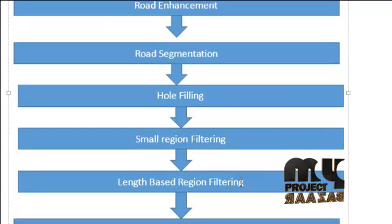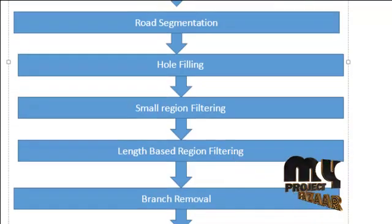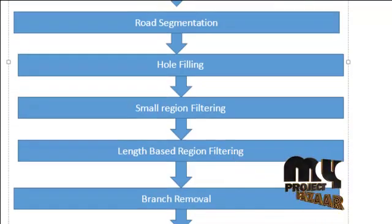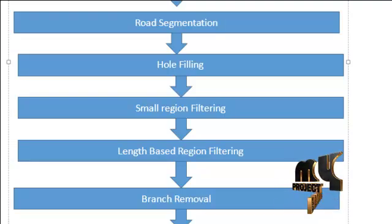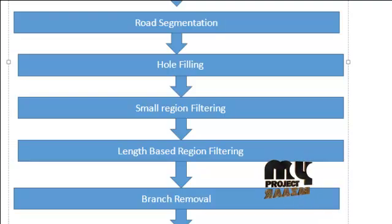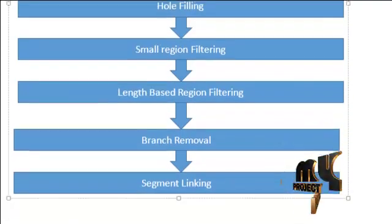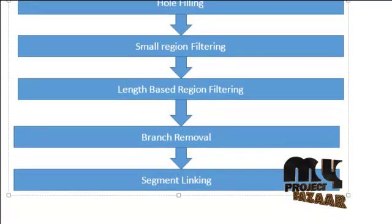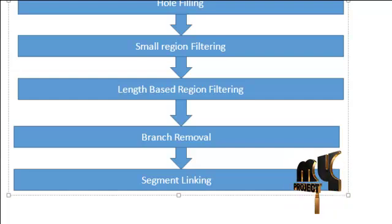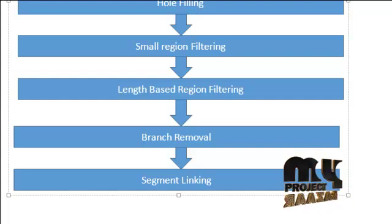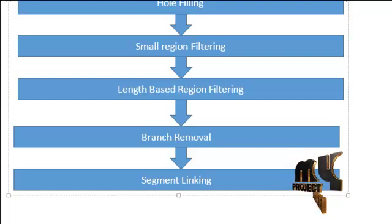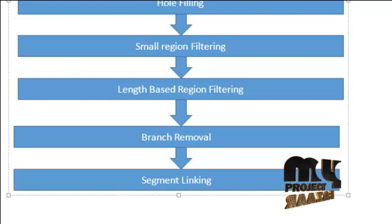Then length-based region filtering is used. Here we remove two kinds of unwanted linear segments to improve the linear representation of the road in an image. Then branch removal is done. Many small non-road linear structures are associated with the main roads. These are characterized by being connected to the main road at one end and free at the other.